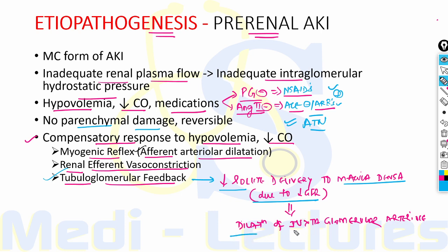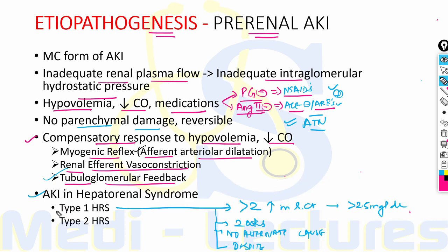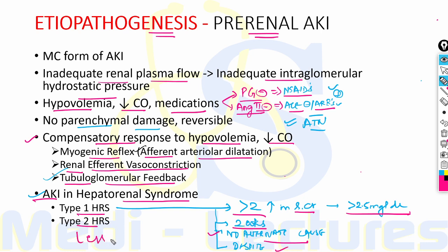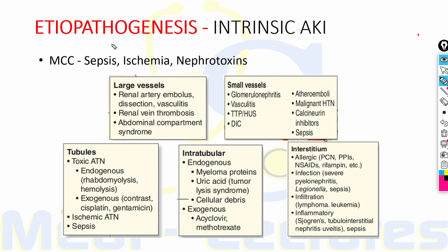In hepatorenal syndrome, there are two types. Type 1 is more grave with poor prognosis, defined as more than twofold increase in serum creatinine to more than 2.5 mg/dL within two weeks without an alternate cause like sepsis, shock, or nephrotoxic drugs, persisting despite volume administration and withdrawal of diuretics. Type 2 HRS is less severe and characterized by refractory ascites without AKI.